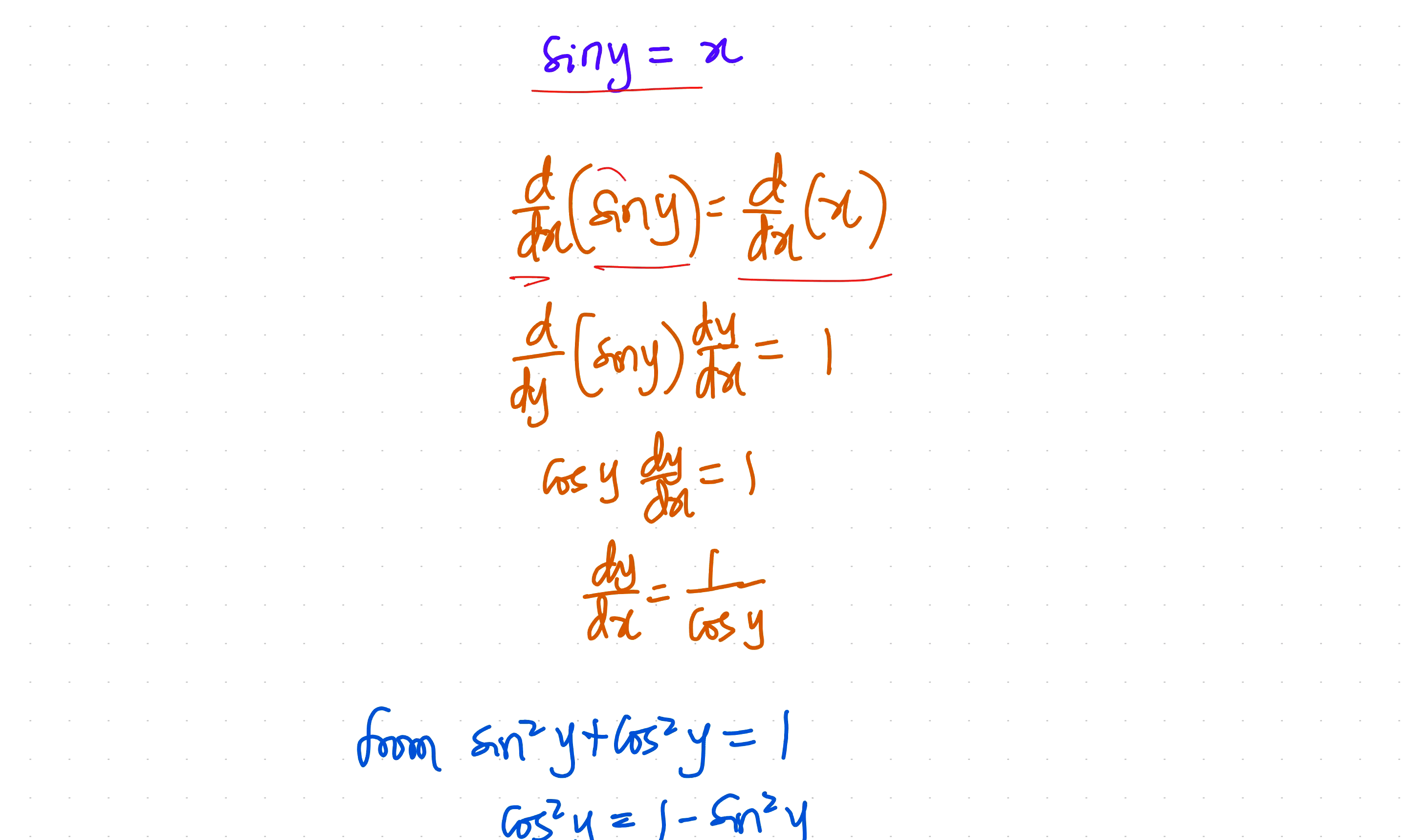So it's difficult to take the d dx of sine y, it's not so straightforward. So you have to break it down. Since sine y is a function of y, then it's better to take d dy of sine y. And then you have to balance that up by multiplying by dy dx. So this is what you can call implicit function.